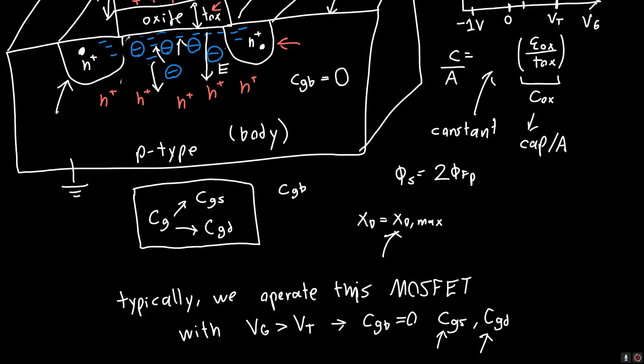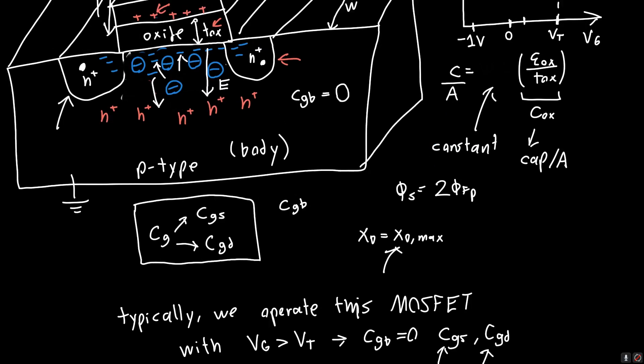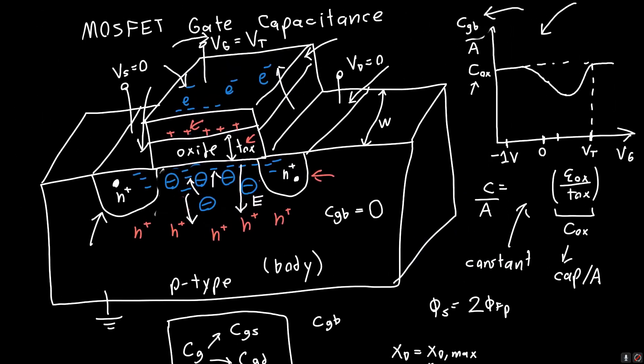This is where the gate capacitance comes from. The reason we call it the gate capacitance is that this channel has different capacitances depending on the voltage applied to the gate. I hope you enjoyed the video — please like, comment, and subscribe, and I'll see you all next time.